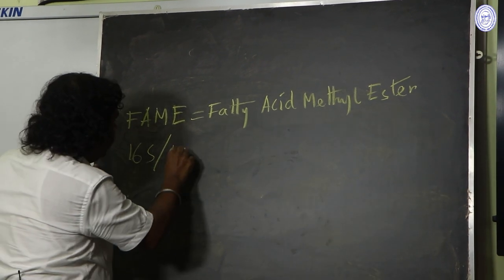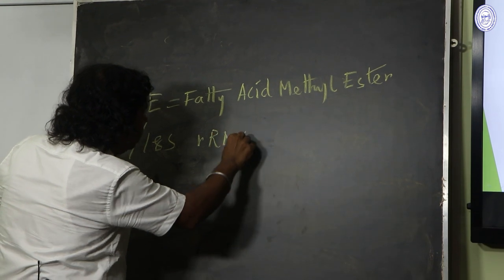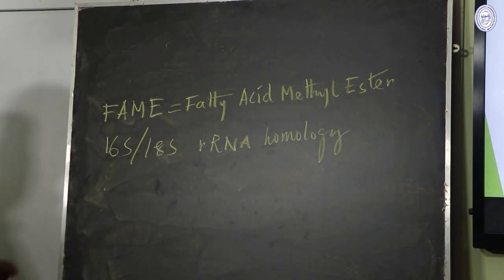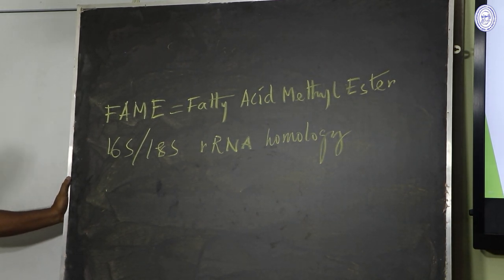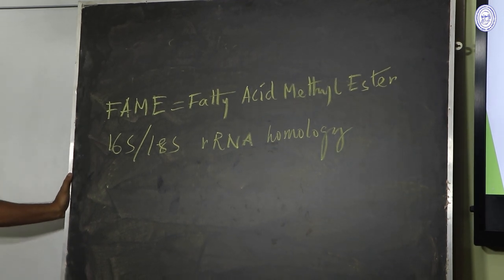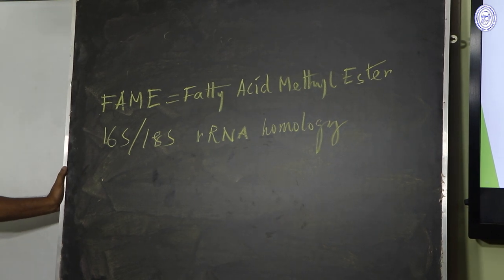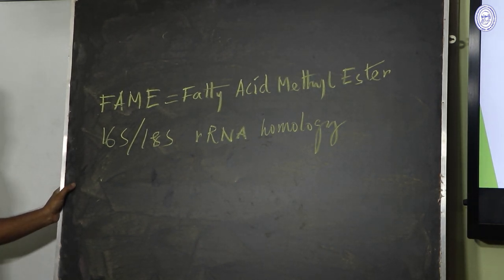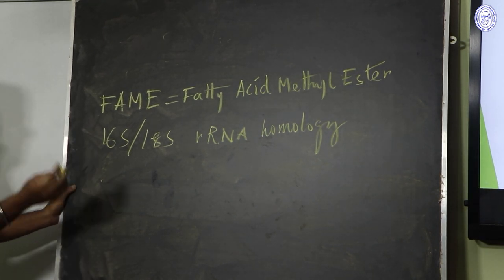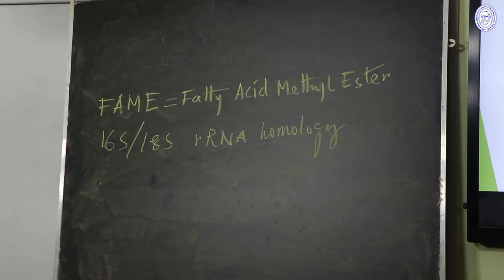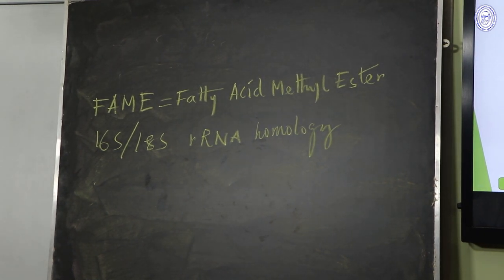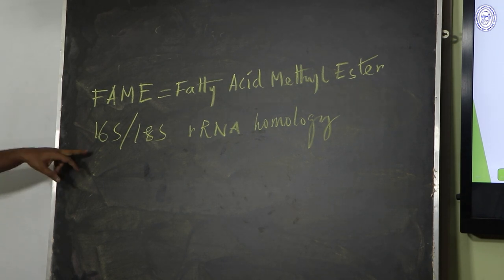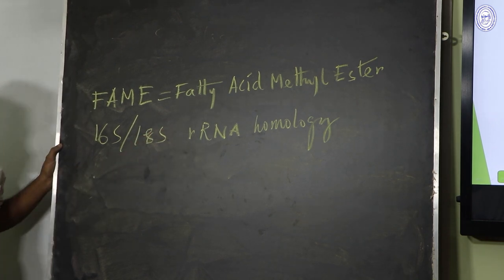Domain Bacteria includes all common bacteria — Chlamydia, spirochetes, gram-positive bacteria, endospore producers, gram-negative bacteria, and cyanobacteria — collectively known as eubacteria. Domain Archaea includes methane producers (methanogens), prokaryotes living in extreme salt (halophiles), and prokaryotes that live in extreme heat (thermoacidophiles). Carl Woese, who died on 30th December 2012, rewrote the history of life. This classification started the era of molecular phylogeny, and scientists still use 16S rRNA (prokaryotes) and 18S rRNA (eukaryotes) to identify organisms.